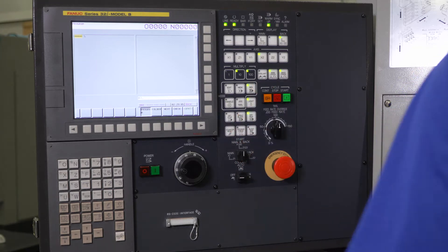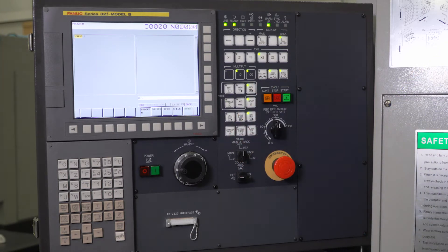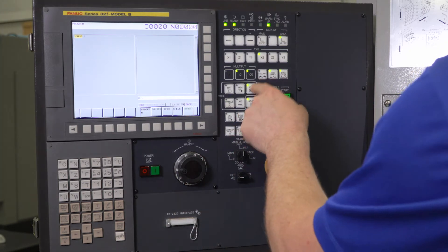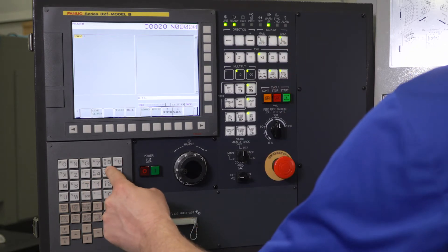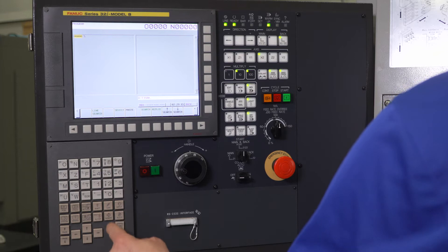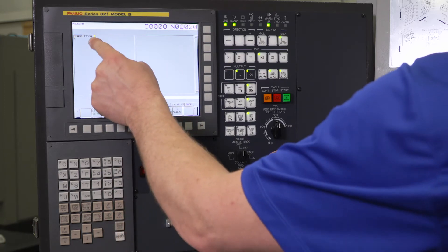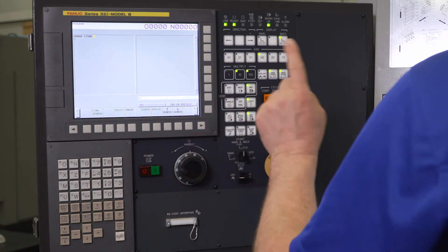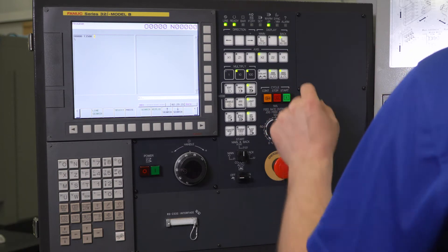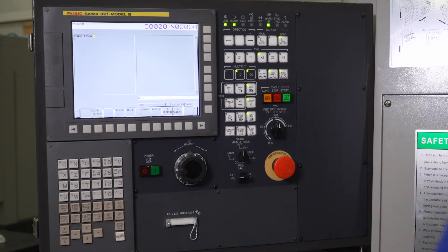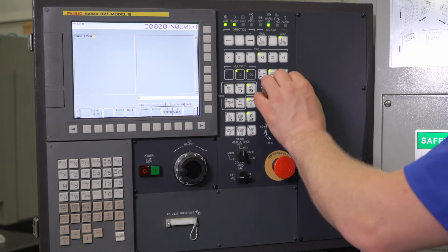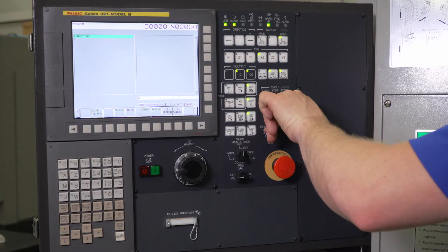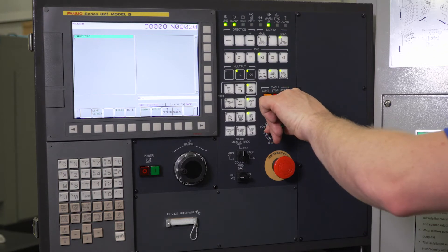Step number one, that's going to be tool number 35. So I'm going to go to MDI on the back side. Make sure you're on the correct side. T3500 and a block insert. So that's tool 35, no offset. I'm going to hit cycle start. That's going to bring my Y axis and X axis to centerline of this particular pocket.